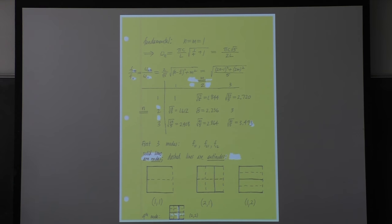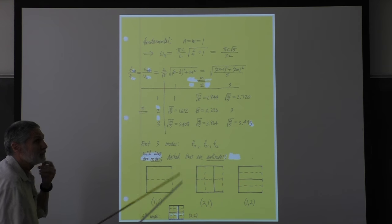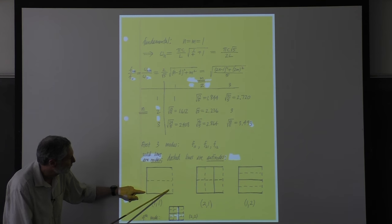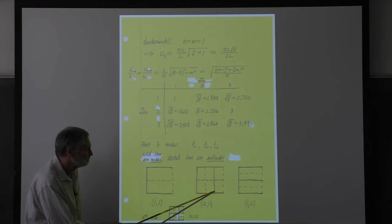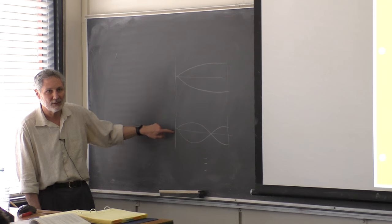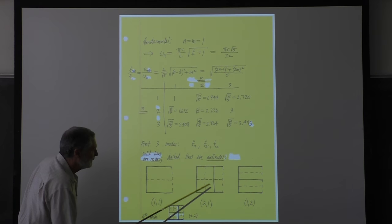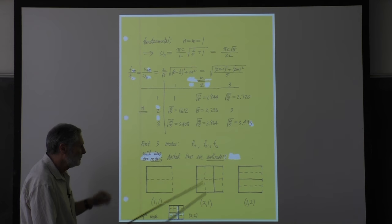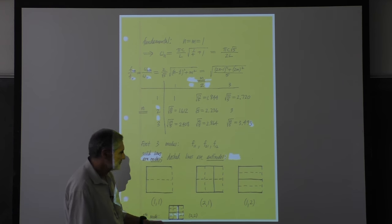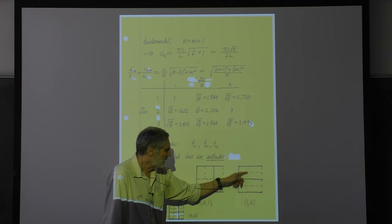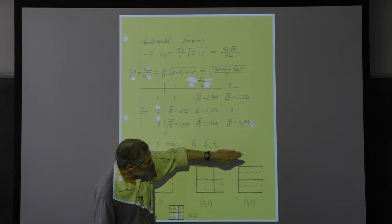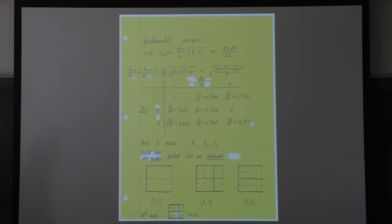This takes some getting used to. Here's the fundamental. Here's the next one up - the 2-1 mode - which now has three-quarters of a wavelength in the x-direction, so there's going to be a node going across. Then the 1-2 mode: we still have just a quarter wavelength in the x-direction, but now we pick up one full wavelength in z, so we go through a node in the z-direction because it goes through one full wavelength.